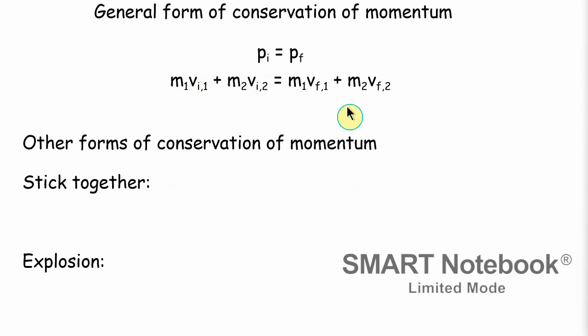But what happens if they don't move independently of each other? Let's take a look at two different situations. You saw the example of the explosion. How about something where they stick together? So imagine like a car crash or two clay balls and when they hit, they will stick together. How do we account for those? So the sticking together before the collision, they are independent objects.